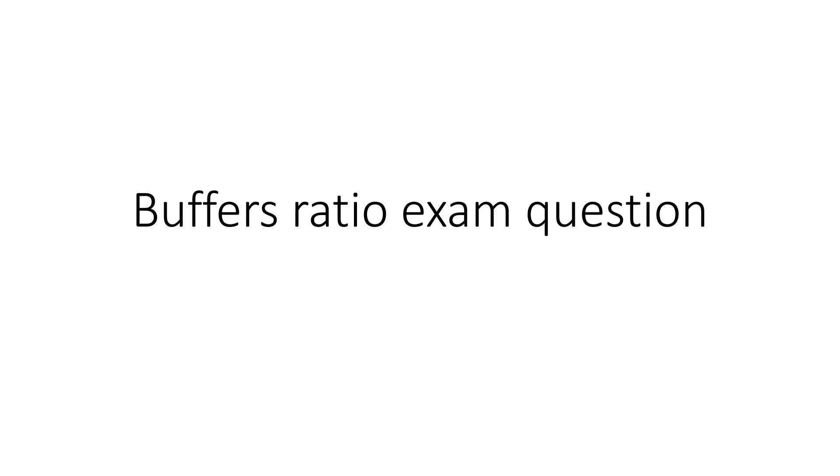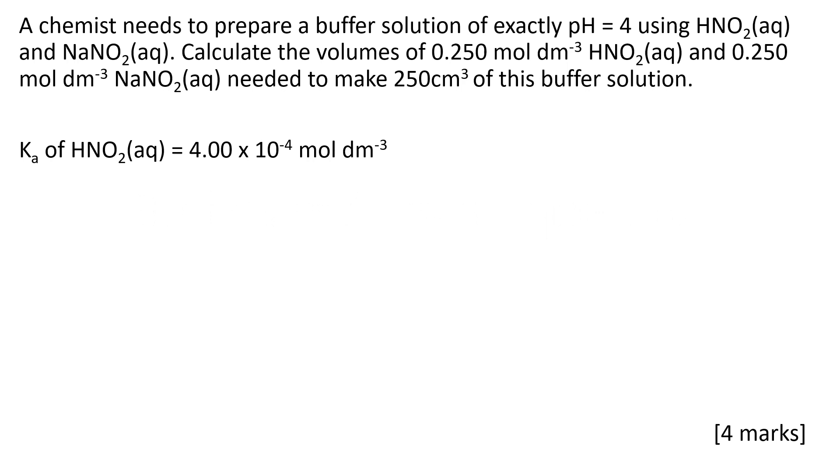Hi, and welcome to this buffer ratio exam question. Let's first of all read the question through. A chemist needs to prepare a buffer solution of exactly pH 4 using HNO₂ and NaNO₂. Calculate the volumes of 0.250 mol dm⁻³ HNO₂ and 0.250 mol dm⁻³ of NaNO₂ needed to make 250 cm³ of this buffer solution. It gives you the Ka value for HNO₂ as well.